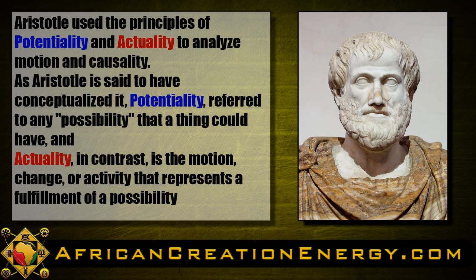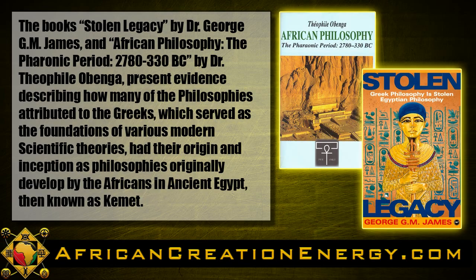As Aristotle is said to have conceptualized it, potentiality referred to any possibility that a thing could have, and actuality, in contrast to potentiality, is the motion, change, or activity that represents a fulfillment of possibility.